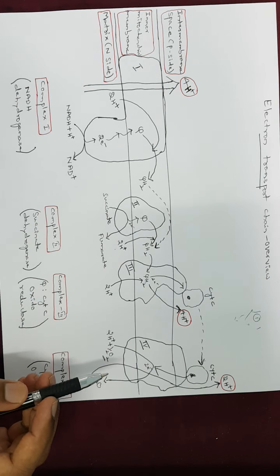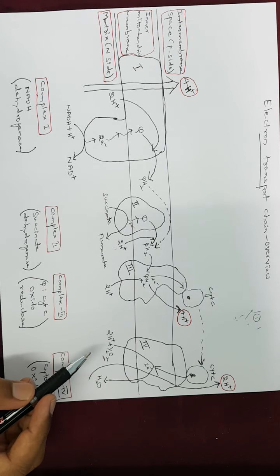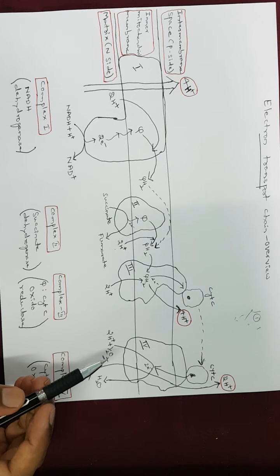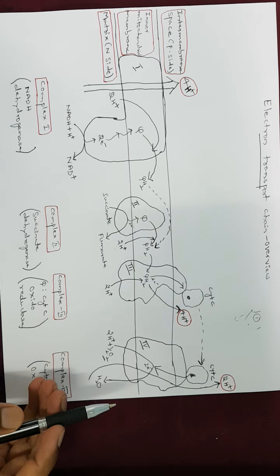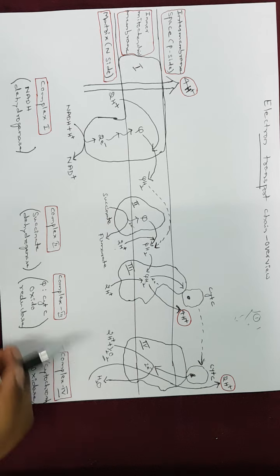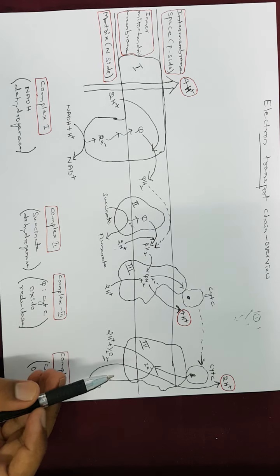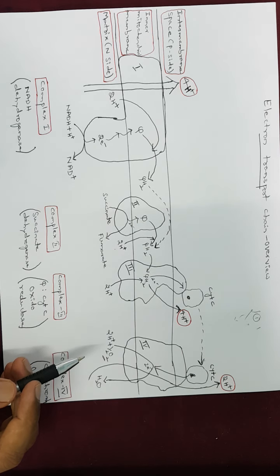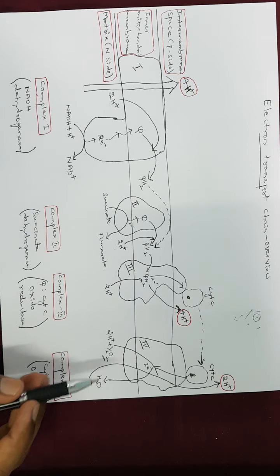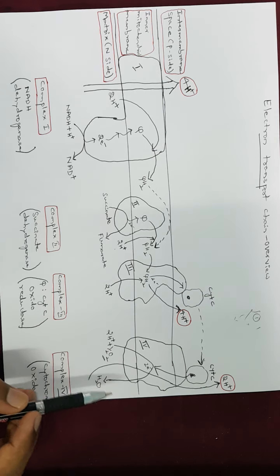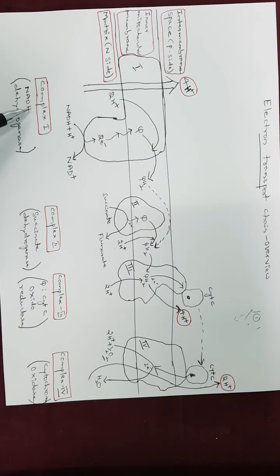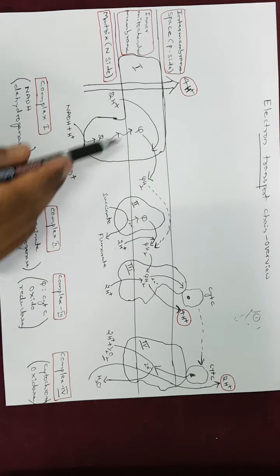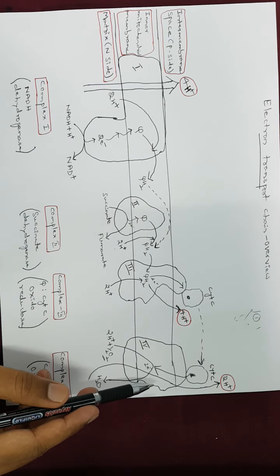Dear students, in the previous classes we were discussing regarding the electron transport system, where we discussed about the structure of the mitochondria, the complexes present in the electron transport chain, and the role of the electron carriers. In today's class we are going to discuss about the electron transport chain, where majorly four complexes are involved: complex one, complex two, complex three, and complex four.